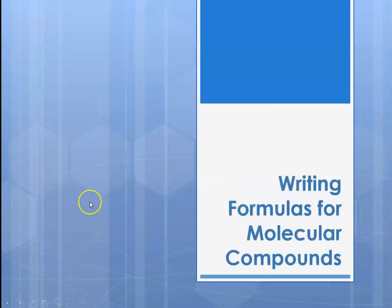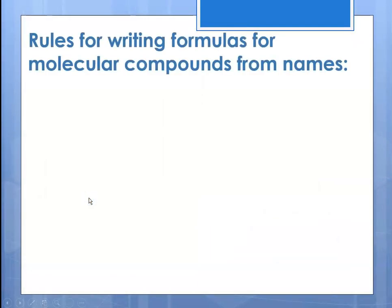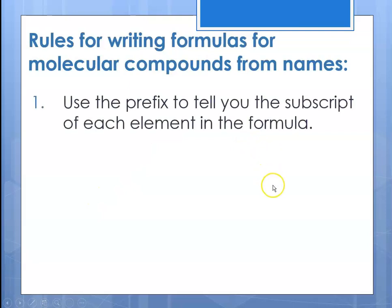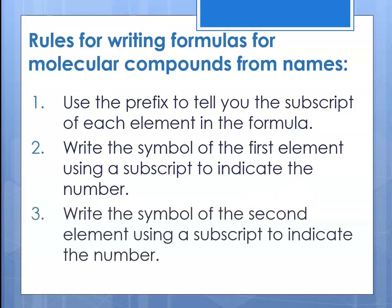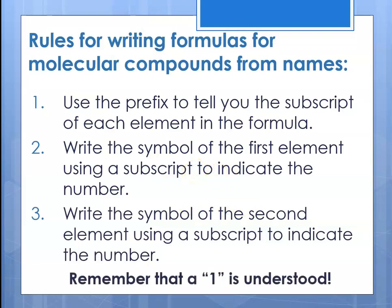Now we'll talk about writing formulas for molecular compounds from their names. The prefix tells you the subscript of each element in your formula. Write the symbol of the first element using the appropriate subscript, then write the symbol of the second element using its subscript. Remember that one is understood in chemistry — we never write subscripts of 1.